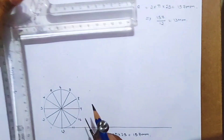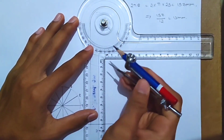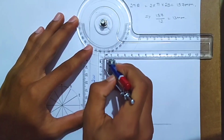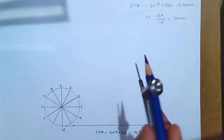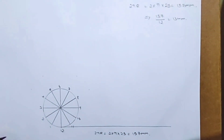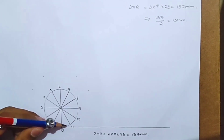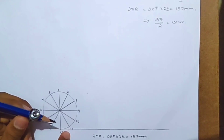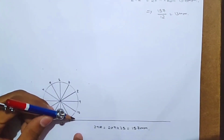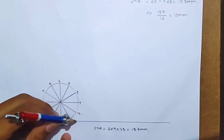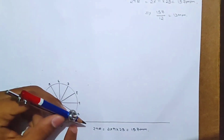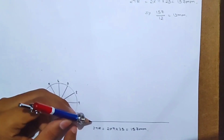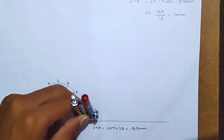Friends, using a compass set to 13mm, mark each point along the horizontal line — 8 points marked. Using the same compass, intersect and cut line points, friends.